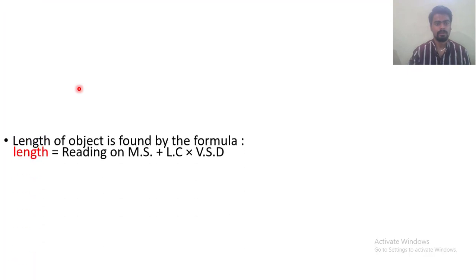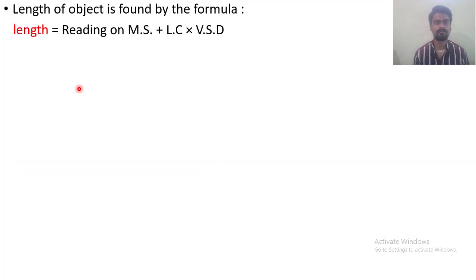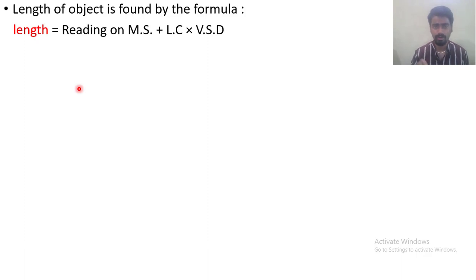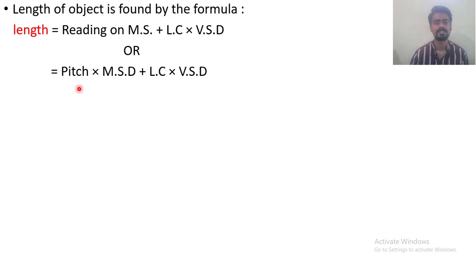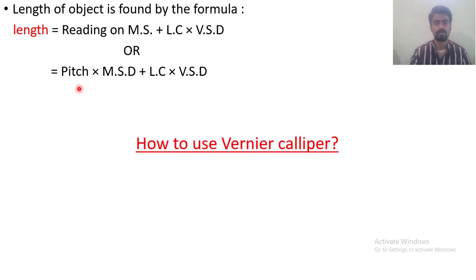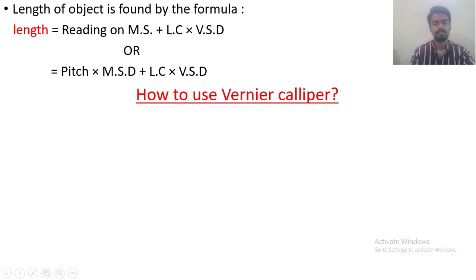Now here is the formula to find out the length of a particular object — you need to remember this. The formula is: Reading on Main Scale + Least Count × Vernier Scale Division. You can also use: Pitch × Main Scale Division + Least Count × Vernier Scale Division. We will now use a simulator — OLABS (Online Labs) — to perform the experiment practically and find out the length of objects.